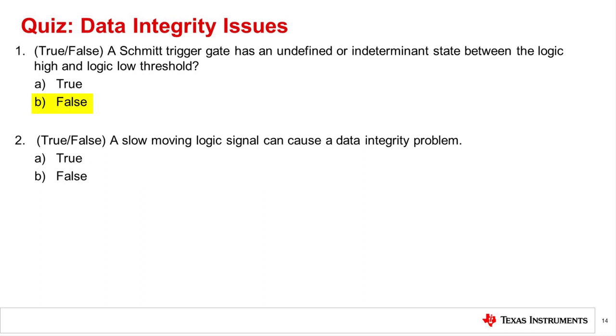The correct answer is B, false. While standard CMOS gates do have an indeterminate state, the Schmitt trigger gate does not. When transitioning below the low threshold, the output transitions to a low. When transitioning above the high threshold, the output transitions to a high. When in between the low and high threshold, the output does not change.